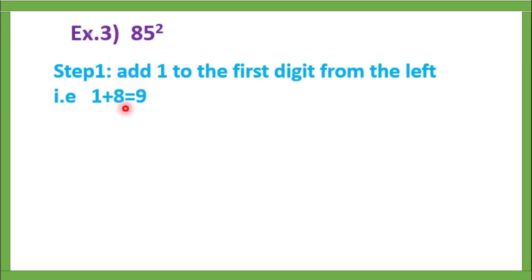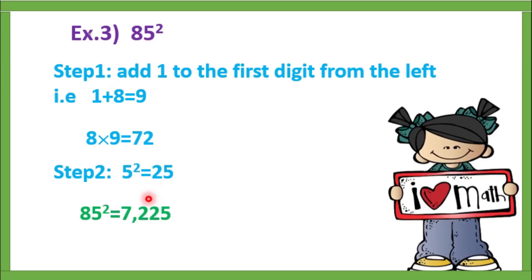Example 3: 85 square. We should add 1 to first digit, so 1 plus 8 equals 9. Now multiply this with 8, so 8 into 9 equals 72, and 5 square equals 25. So 85 square equals 7225.